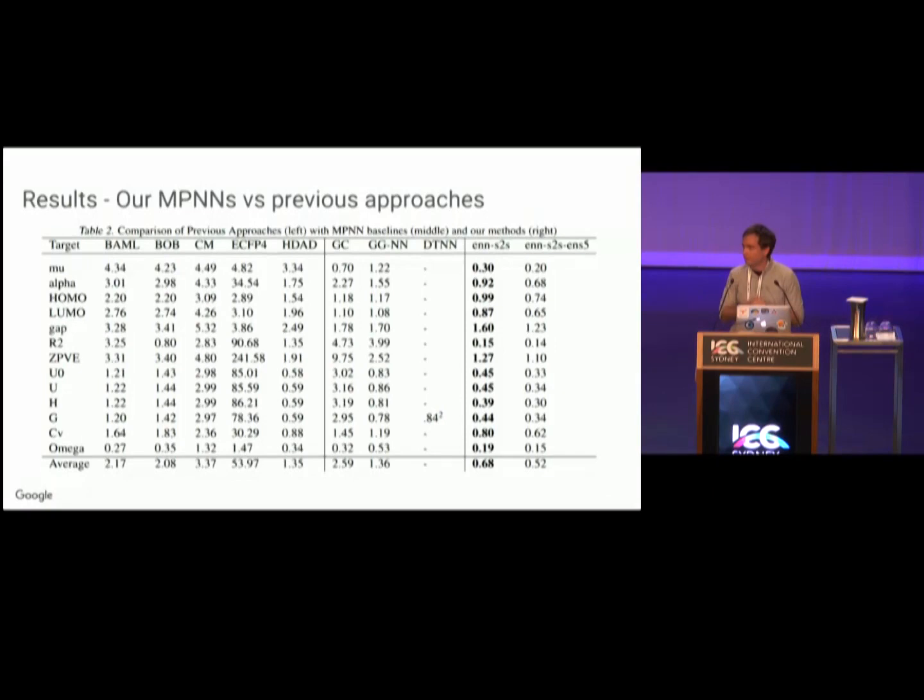So we apply this to QM9. How do we do? I don't expect everyone to digest all the numbers in this table, but the numbers are proportional to the mean absolute error of the models. We compare against the five different hand-engineered featurizations that I mentioned before. In the middle, we compare against three different message-passing neural network baselines. We're able to get state-of-the-art on all 13 tasks. On average, we're a factor of two better than the best baseline.